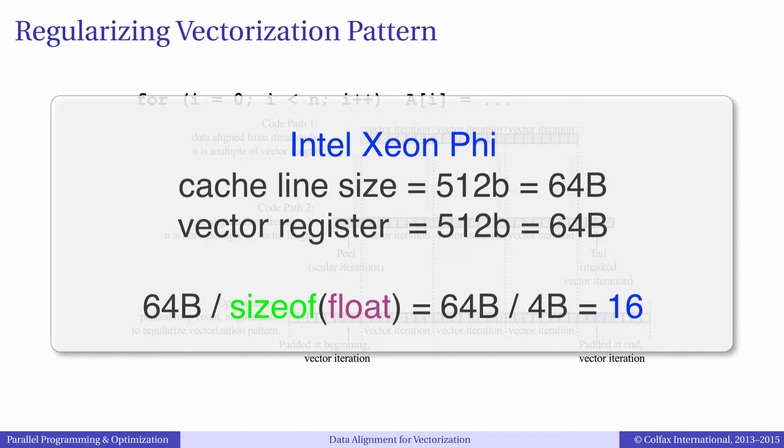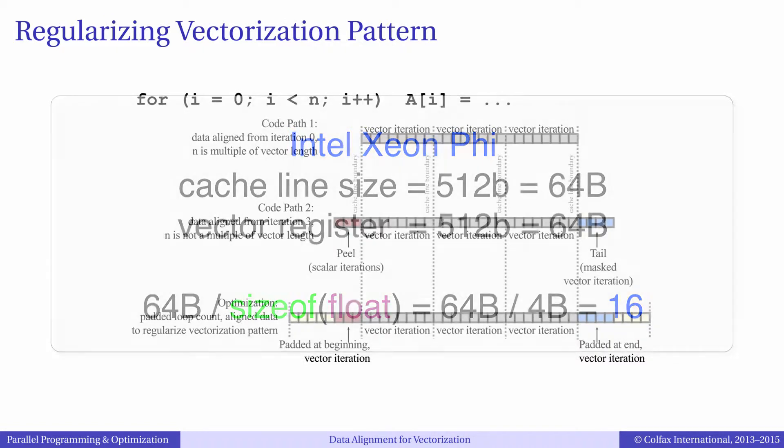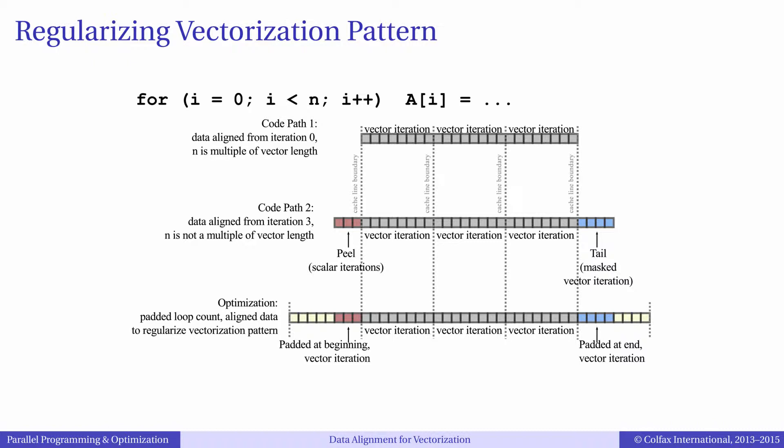However, what happens if one of those conditions does not hold? Turns out, the vectorizer in Intel compilers can handle those situations. If your array does not begin on an aligned boundary, the compiler will implement a peel loop, which performs a few iterations at the beginning with scalar instructions or masked vector instructions. This is done to get to the first aligned element, after that the code will proceed with vector instructions.